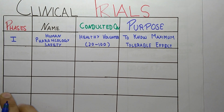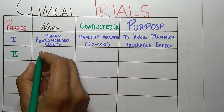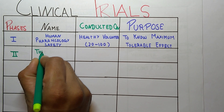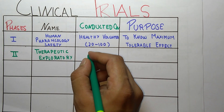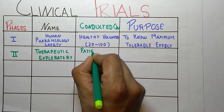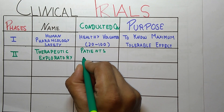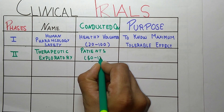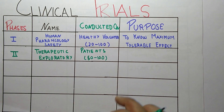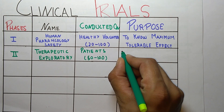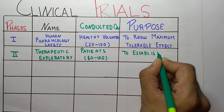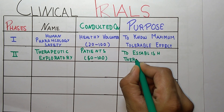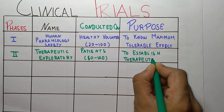The second phase is Therapeutic Exploratory. It is conducted on patients, and the number of patients is 50 to 100. The purpose of this phase is to establish therapeutic efficacy.